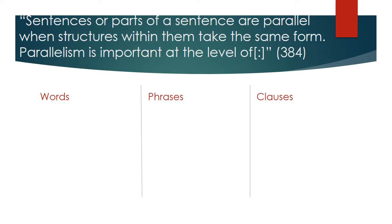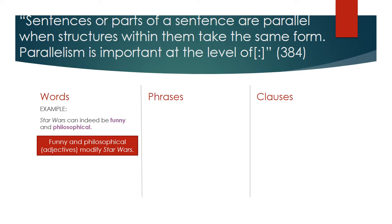Let's look at an example of parallel structure with words. We've got this sentence: 'Star Wars can indeed be funny and philosophical.' It is simply parallel because the two words are both adjectives. Some of you might be looking at this and saying that's just a list of adjectives, and that's true. But technically, a list of any type of word — adjectives, nouns, adverbs — is parallel, simply because the structure of the word is taking the same form. It's good to note that this is still an example of parallel structure, although it isn't necessarily rhetorically strong so much as it just is parallel.